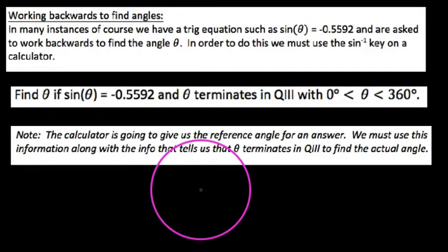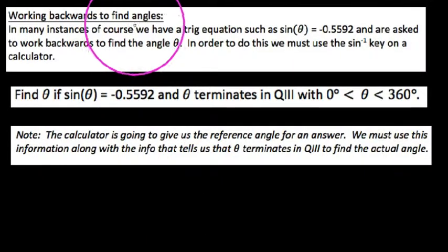Alright YouTube, this is my last video on my module on reference angles, but we're going to focus in this video on working backwards if we already had a trig equation such as this one that says sine of theta equals negative 0.5592. What is theta? Working backwards in order to find this angle theta.